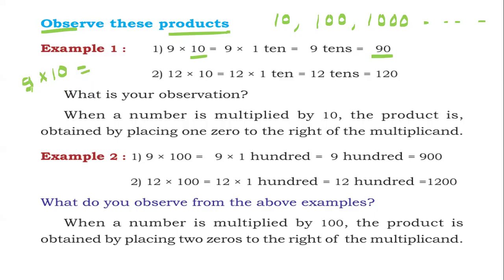Left hand side number, put as it is. How many zeros are there in the right hand side? 1 zero. Put this in the right hand side. This will be the answer: 90. 9 into 10 is 90.